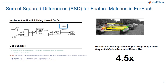The first example is the sum of square differences algorithm, which can be used for feature matching. This algorithm can be easily modeled using a nested for-each subsystem. On a six-core desktop machine, the generated codes with parallel loops can run about 4.5 times faster than the sequential codes.